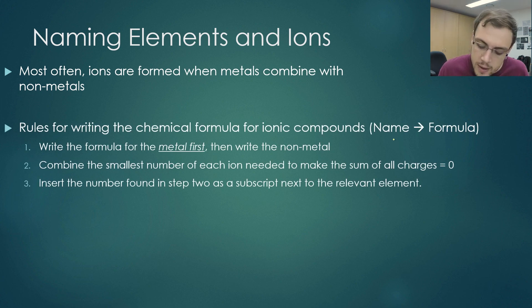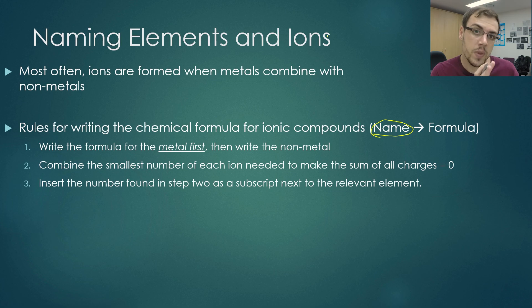If you can see that there is a metal that is bound to a non-metal, there is a very high chance that it is bound ionically and it should follow the following rules. If you are given the name, you're given the actual name of the compound and you want to write it as a chemical formula, here are the steps that you take. You write the formula for the metal first.